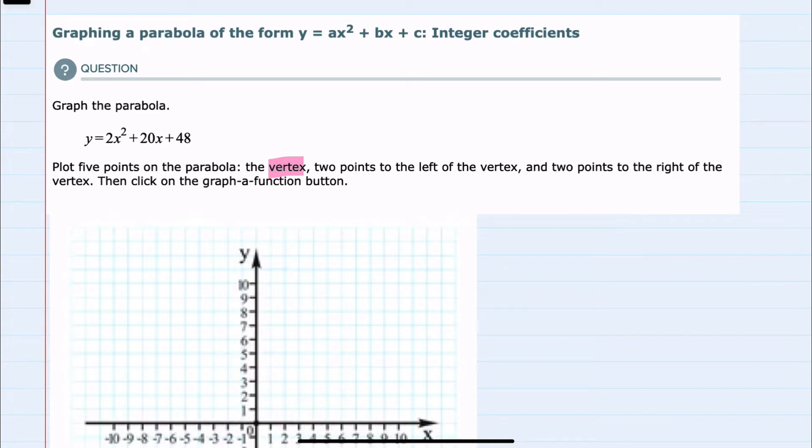The vertex, two points to the left, and two points to the right. I'll start by finding the vertex, which I know will go through the axis of symmetry. We should recall that the equation for the axis of symmetry when we have this sort of standard form is the line with the equation x equals negative b over 2a.